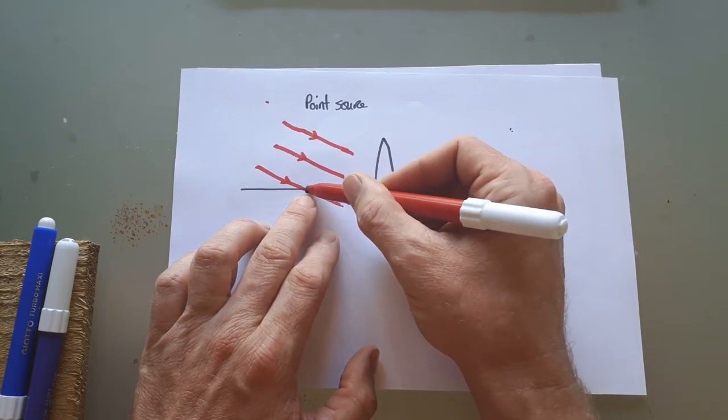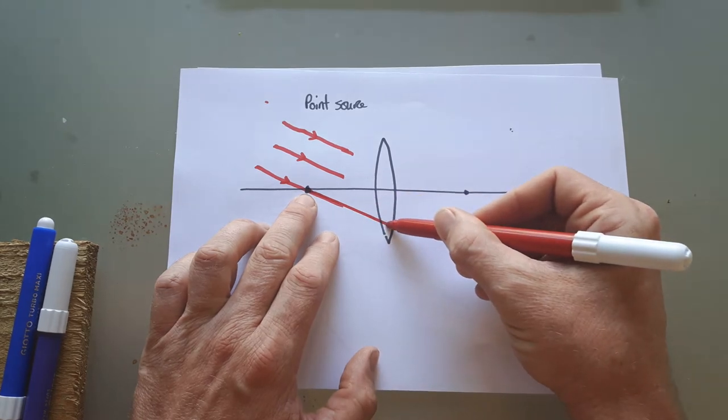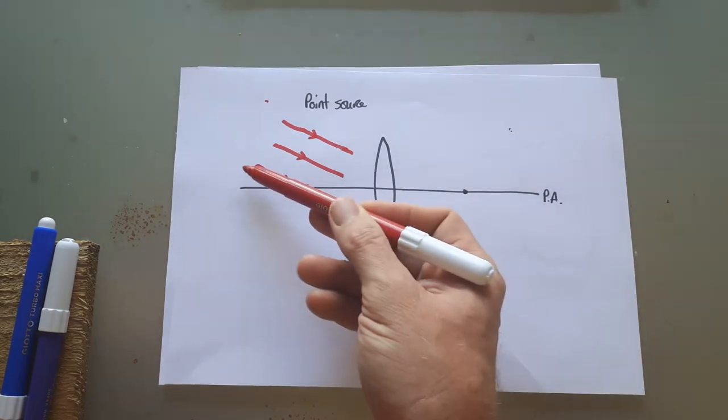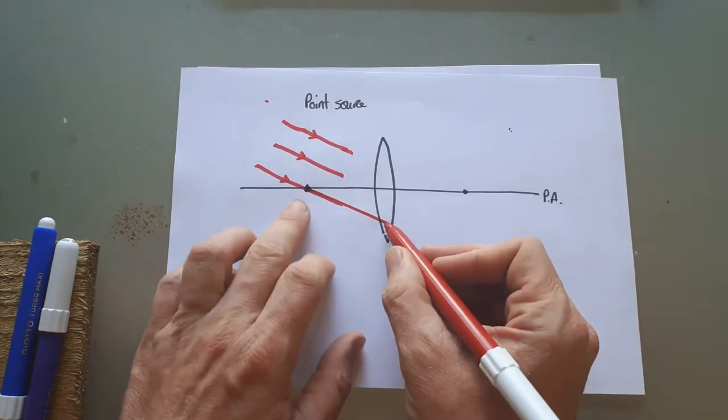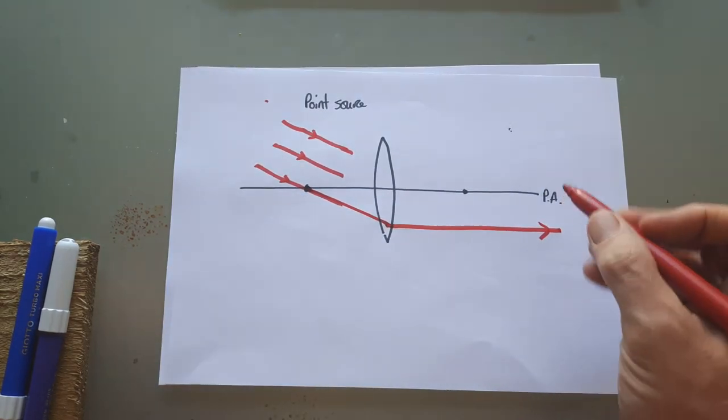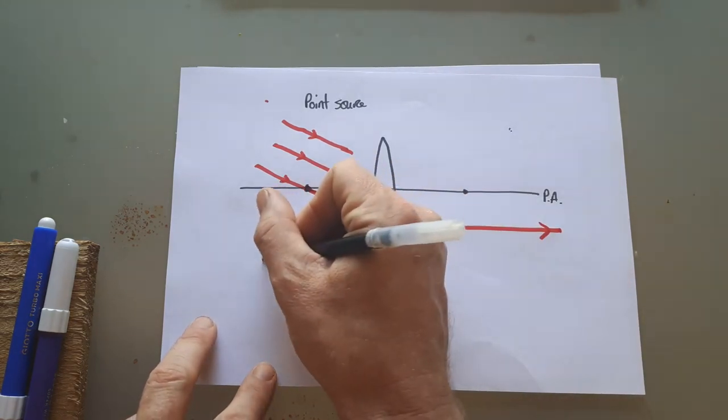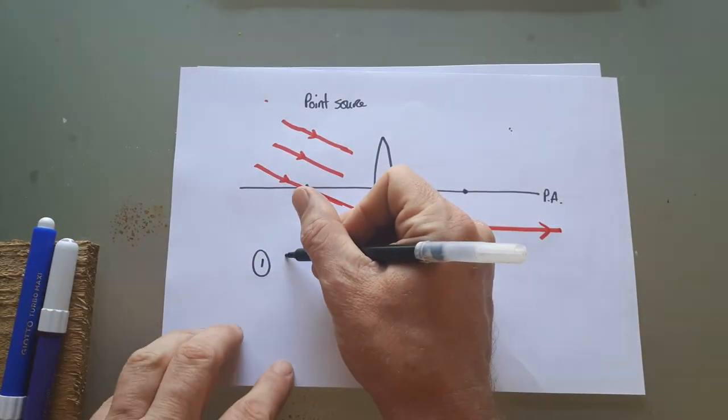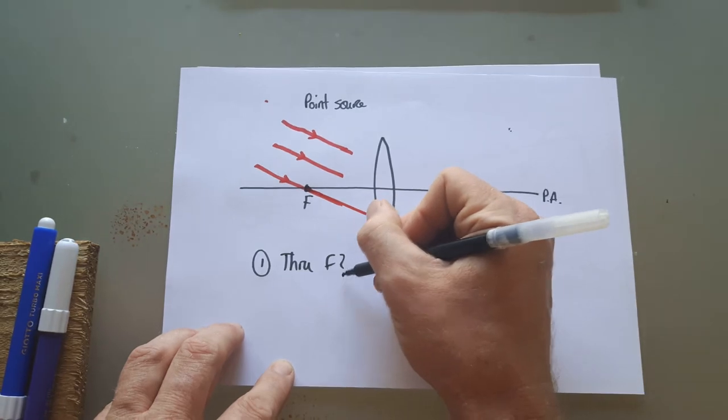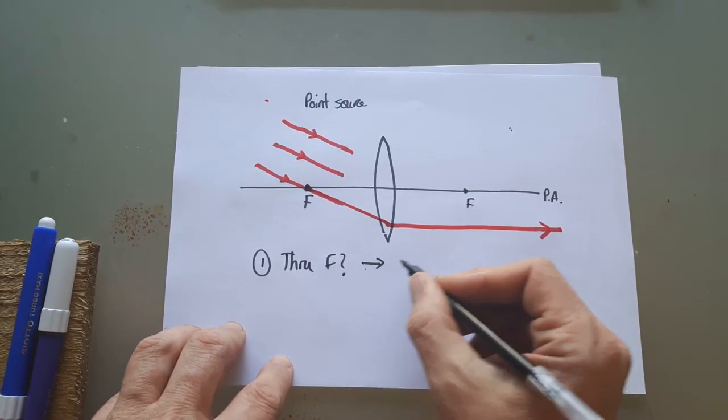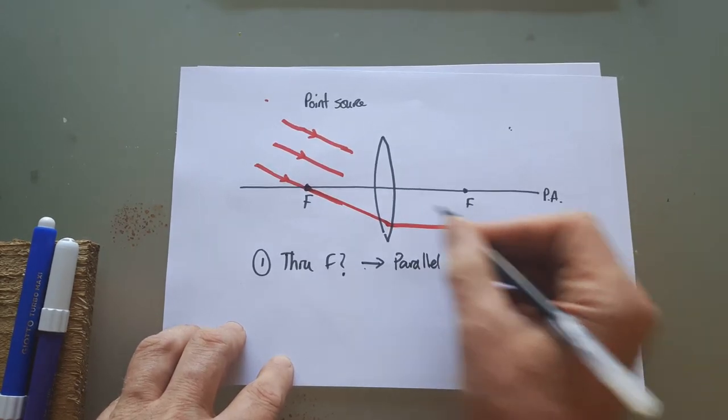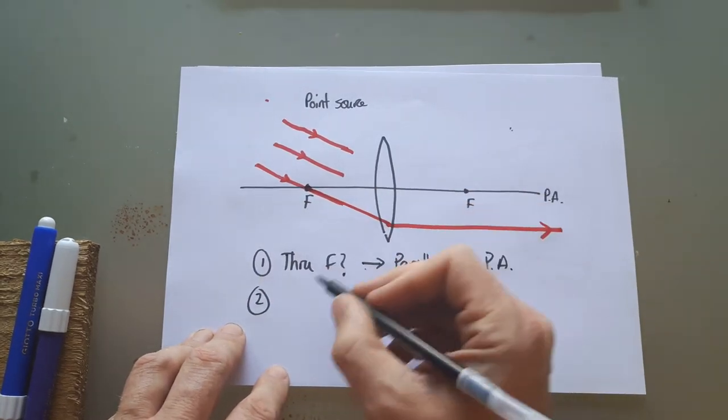The three rays are parallel. The first rule is this: if the ray comes through the focal point, which one of them always will, then you know from our first videos that in the reverse direction, if it comes in parallel to the principal axis, it passes through the focal point. So the reverse is true: if it comes through the focal point, it comes out parallel to the principal axis. So that's our first rule for constructing. If the ray goes through the focal point, therefore it comes out parallel to the principal axis.